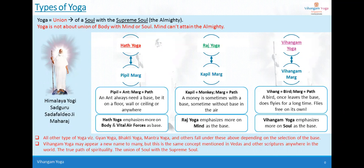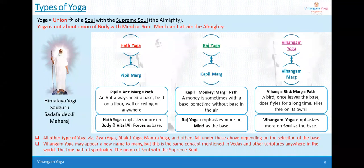Vihangam Yoga may appear to many as a new terminology, but its process and principles are not new. This concept and method has been mentioned in the Vedas by the name Para Vidya. Similarly, in other scriptures across the whole world, wherever we talk about uniting ourselves, it is nothing but this same process. The ultimate objective is to unite our soul with the supreme soul, which is possible through Vihangam Yoga practice. Thank you very much for listening.